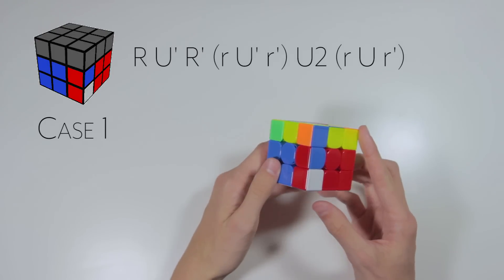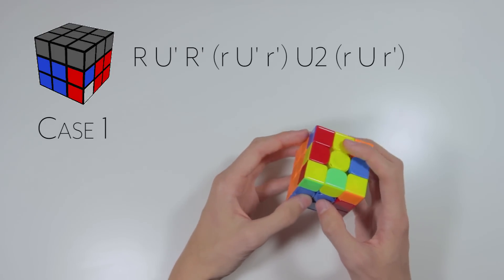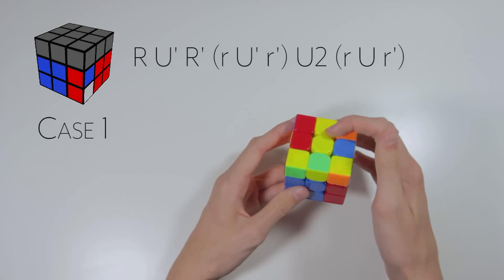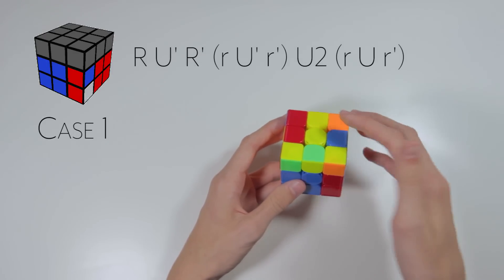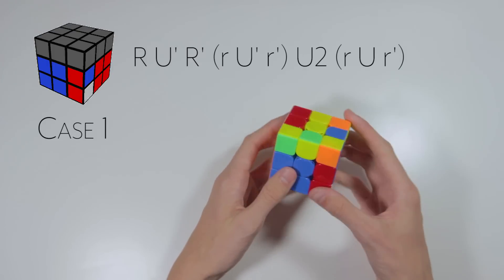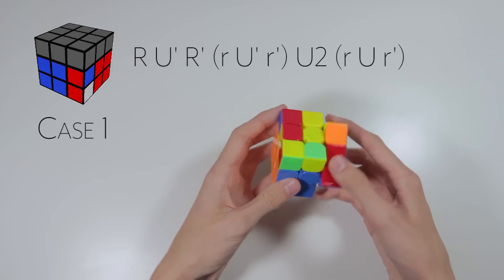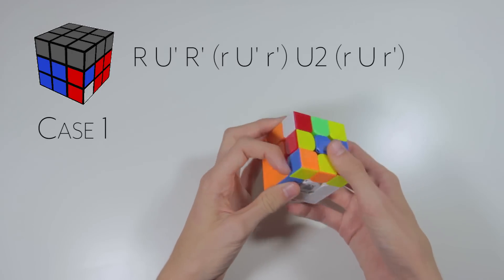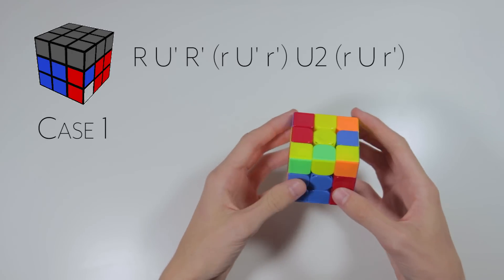But if you use this algorithm you can solve it much quicker and you can even manipulate edge orientation. If you only have one edge oriented at the beginning, put it in the back and then by the end you'll have all the edges oriented. So the algorithm for this case looks like this.